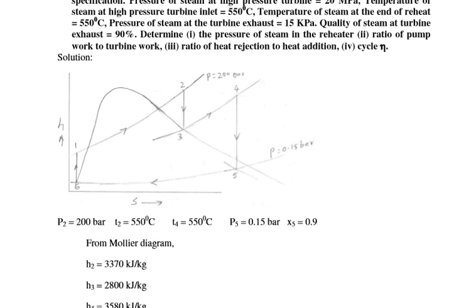Numerical two: An ideal Rankine cycle with reheat is designed with the following specifications. Pressure of steam at the high pressure turbine inlet = 20 MPa. Temperature at HP turbine inlet = 550 degree Celsius. Temperature of steam at the end of reheat = 550 degree Celsius. Condenser pressure = 15 kPa. Quality of steam at turbine exhaust = 90%.